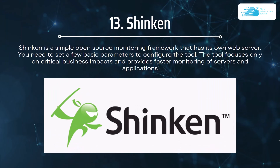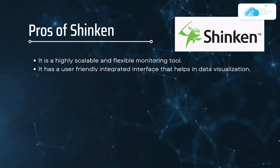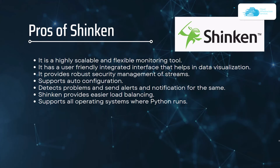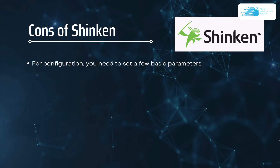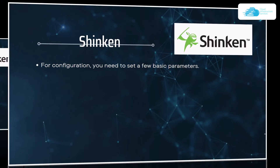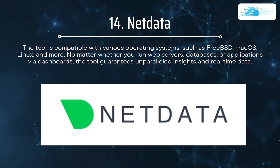Number thirteen on our list is Shinken. Shinken is a simple open source monitoring framework with its own web server. You need to set a few basic parameters to configure the tool. It focuses on critical business impacts and provides faster monitoring of servers and applications. The pros include being a highly scalable and flexible monitoring tool with a user-friendly integrated interface that aids in data visualization and provides robust security management of streams. The only con is that you need to set a few basic parameters before using Shinken.